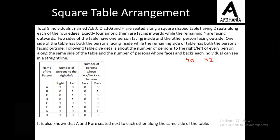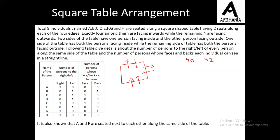Two sides of the table have one person facing inside and one person facing outside. One side of the table has both persons facing inside, and the remaining side has both persons facing outside. So basically we have four combinations: inside-outside, inside-outside, two outside, and two inside — that gives us four cases.